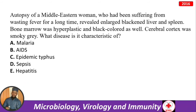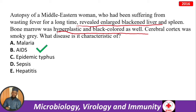An autopsy of a Middle Eastern woman who had been suffering from wasting fever for a long time revealed enlarged, blackened liver and spleen; bone marrow hyperplastic and black-colored; cerebral cortex smoky gray. This is characteristic of malaria — remember the life cycle of Plasmodium: hepatic phase and erythrocytic phase. The answer is malaria.